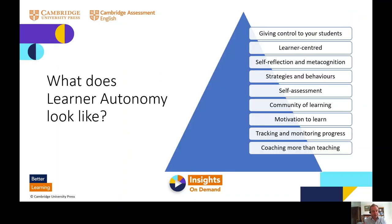That's a definition, but it only comes to life when you think about what a learner autonomy classroom looks like — one that is strong in developing learner autonomy. You'd expect the teacher to be giving control to students in different ways and degrees. The lesson would be much more learner-centered — about what the learners are doing and what they need, with a lot of self-reflection, metacognition, talk about strategies, behaviours, techniques, and routines. There would be self-assessment and the teacher would be building a community of learning, spending time thinking about how to engage students and their motivation.